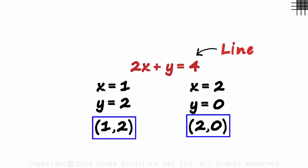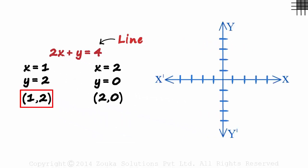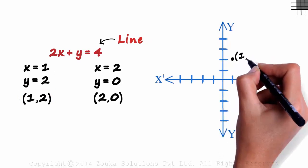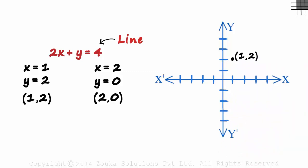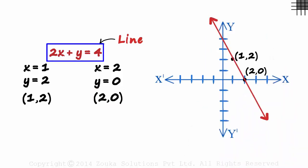With these two points, we can easily draw a line for this equation. On the coordinate plane, where will 1 comma 2 be located? 1, 2. Here. This will be 1 comma 2. Similarly, 2 comma 0 will be located here. And this is the line of 2x plus y equal to 4.